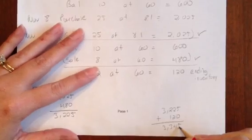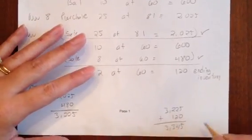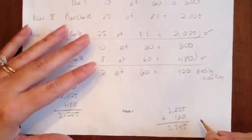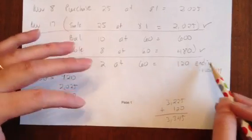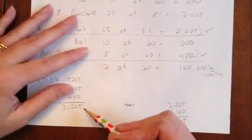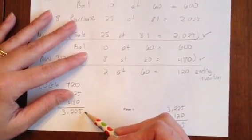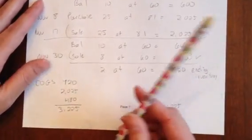That's the same total we got for FIFO. So in total, it's the same amounts. It's just different whether you have a higher ending inventory or a higher cost of goods sold. Next, we'll do weighted average.